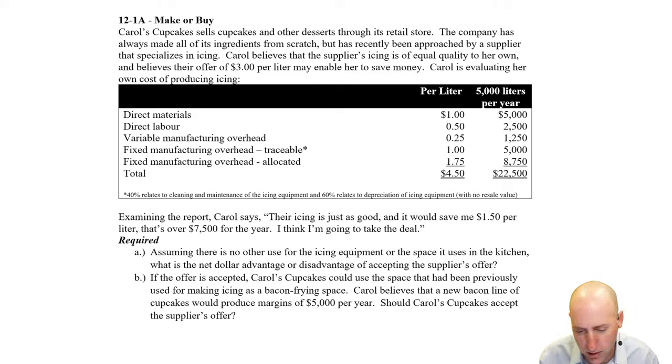Carol's Cupcake sells cupcakes and other desserts through its retail store. The company has always made all of its ingredients from scratch, but has recently been approached by a supplier that specializes in icing. Carol believes that the supplier's icing is of equal quality to her own. That's very important. Of course, if it was a lower quality than it doesn't matter the financial dilemma. It's like it's bad icing. We're not going to use it, but she believes it's of good quality and believes their offer of $3 per liter may enable her to save money. Carol's evaluating her own cost of producing ice cream. So her cost per liter, as you can see there, is $4.50. The supplier's cost is $3 and there's the dilemma, right? Well, it looks like maybe some money savings are to be had for Carol if she accepts the supplier's icing.